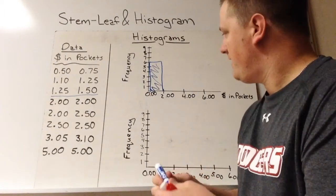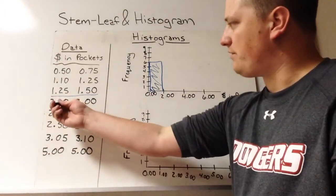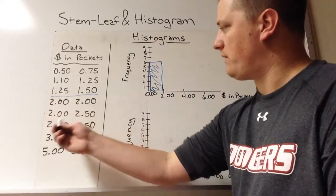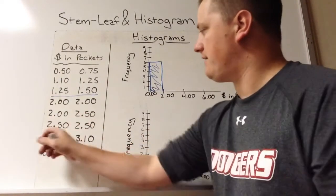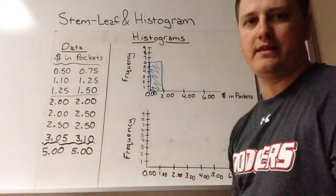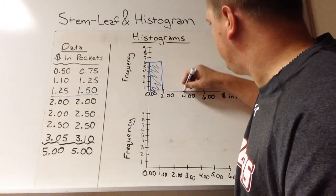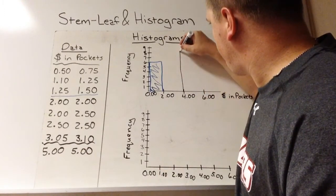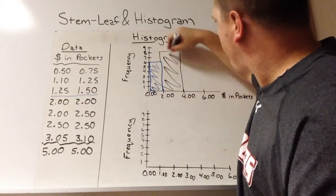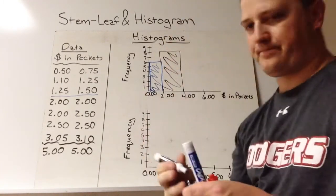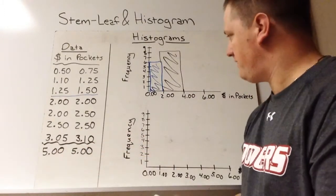There's the zero to two dollar bin up to six. Now for two to four dollars: one, two, three, four, five, six, seven, eight — these eight are from two to four dollars. And our last bin is four to six dollars, and there are two values there.